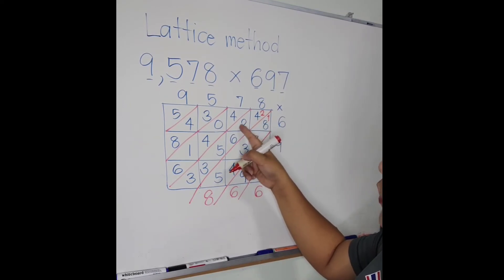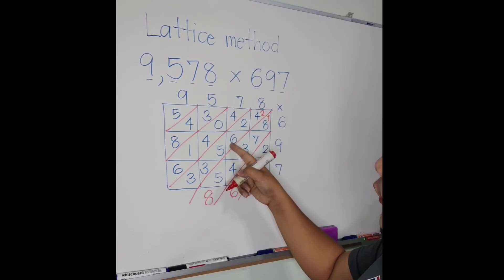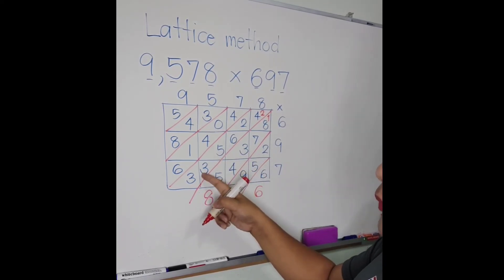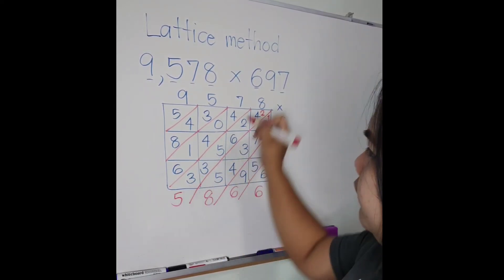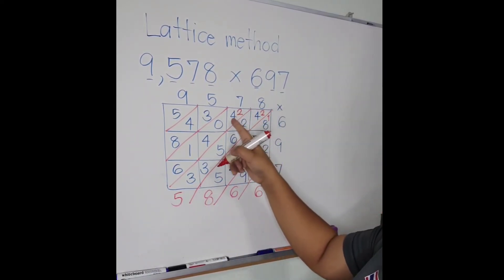Plus 2 is 8, plus 6 is 14, 14 plus 5 is 19, 19 plus 3 is 22. 2 plus 3 is 25, carry 2.